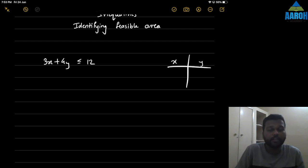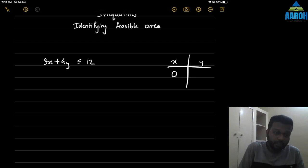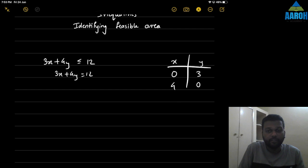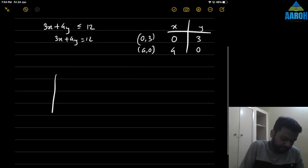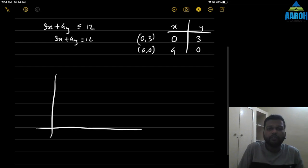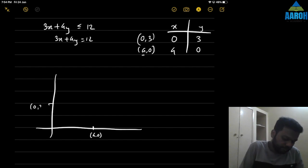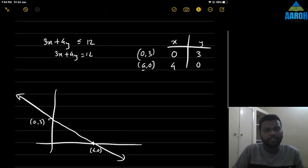First, convert this to an equation: 3x plus 4y equals 12. If x is 0, then 4y equals 12, so y is 3. If y is 0, then x is 4. So we have two points: 0 comma 3, and 4 comma 0. Let's draw them — 4 comma 0 is on the x-axis, and 0 comma 3 is on the y-axis. When we join these two we get a line.